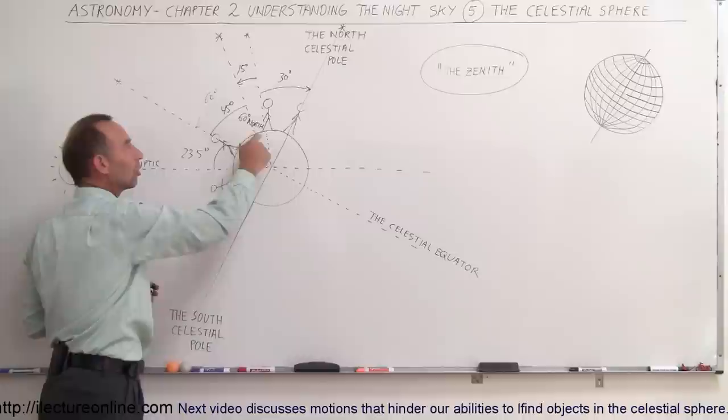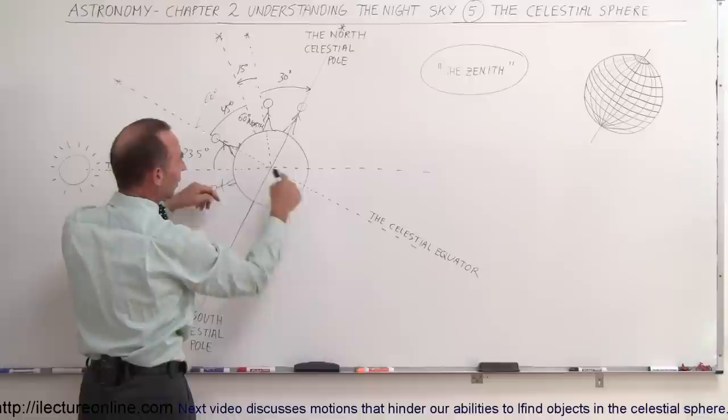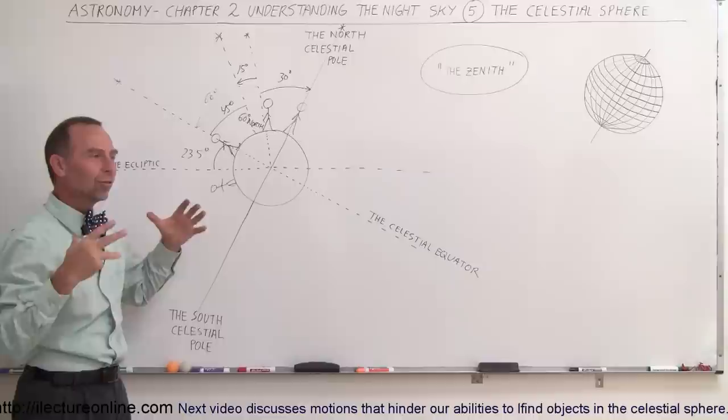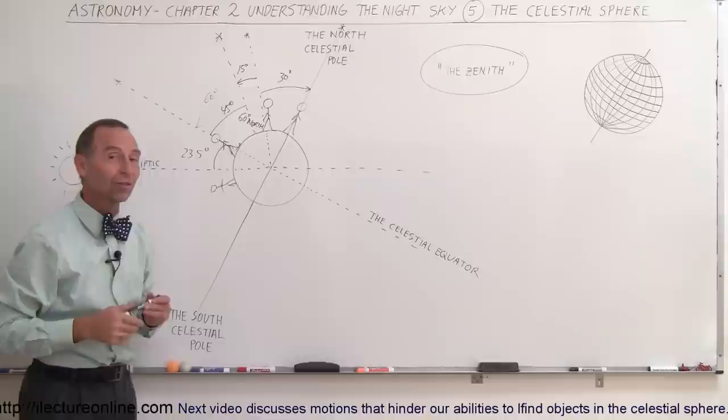That's why we need the celestial sphere. It needs to be fixed upon the Earth and coordinated with the coordinate system of the Earth — north pole, south pole, the equator — because that's really the only thing we have that we can relate to that makes sense to us. The celestial sphere is fixed upon that. In a later video, we'll deal with how we handle the fact that the Earth is rotating and revolving around the sun. Thank you.